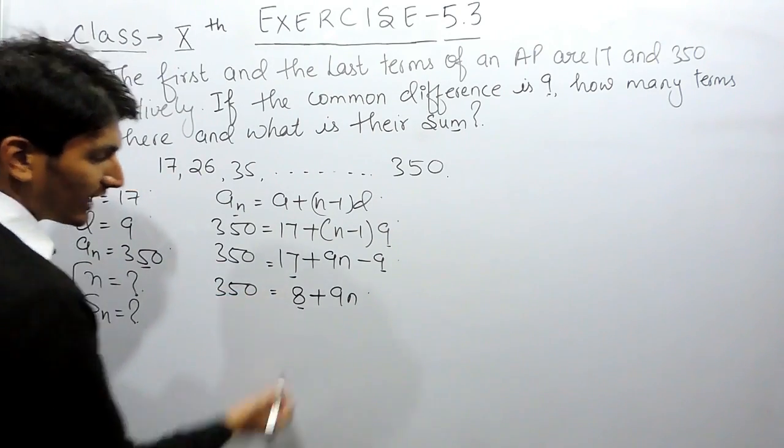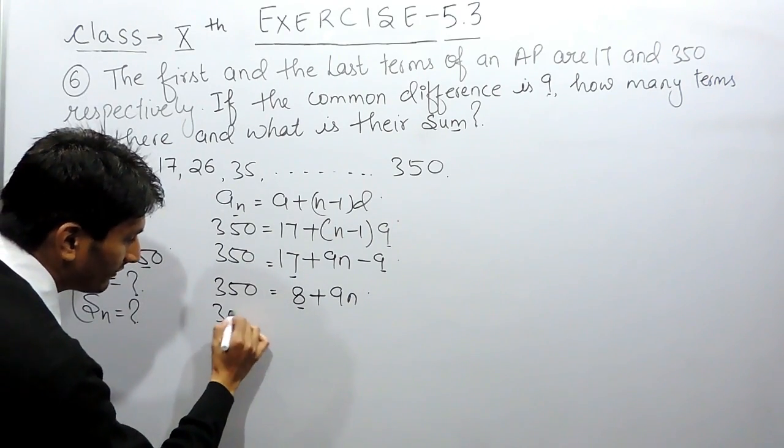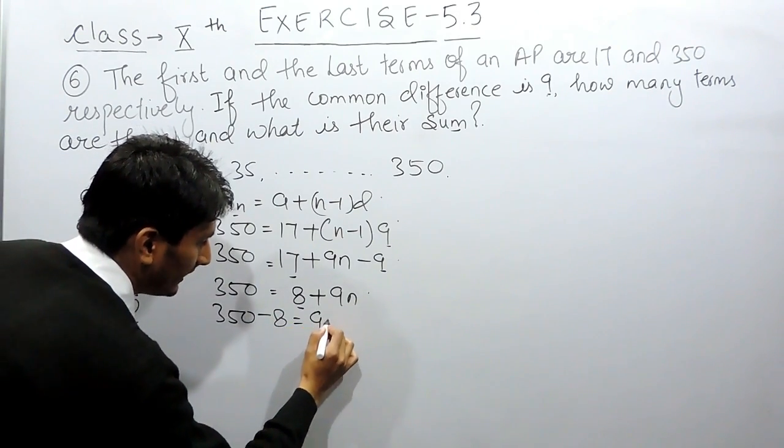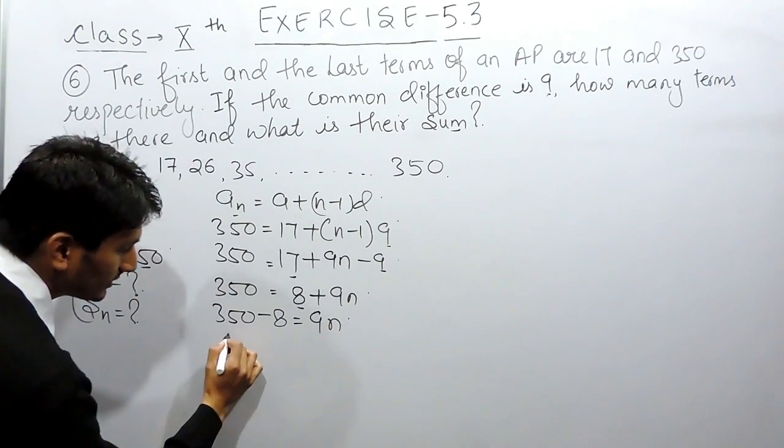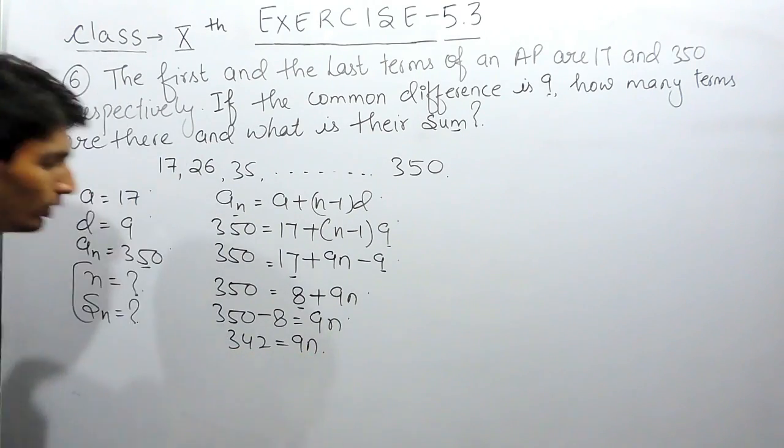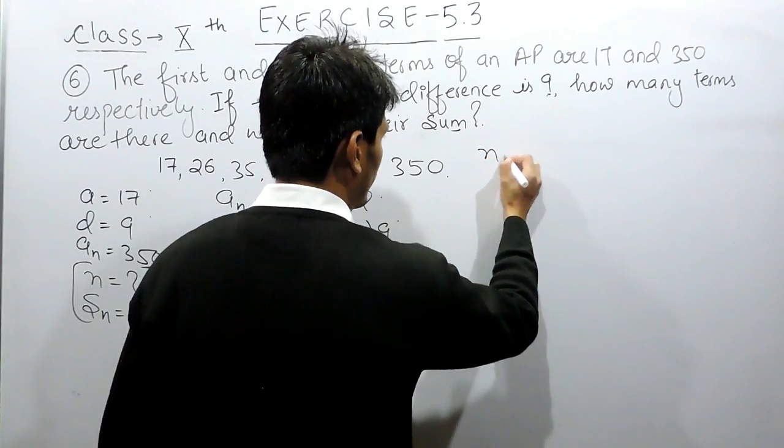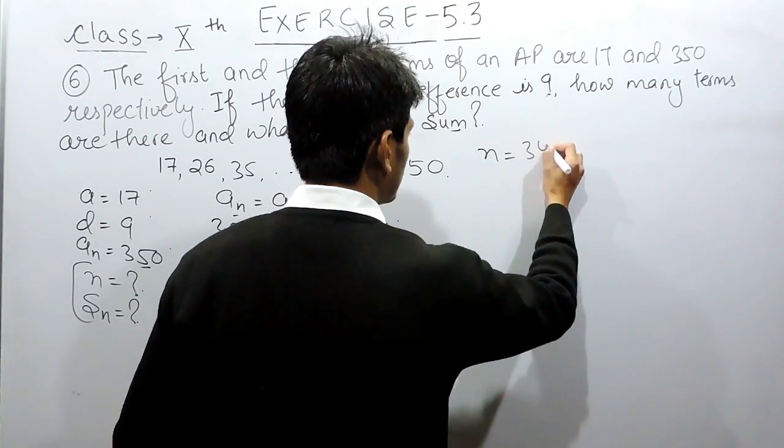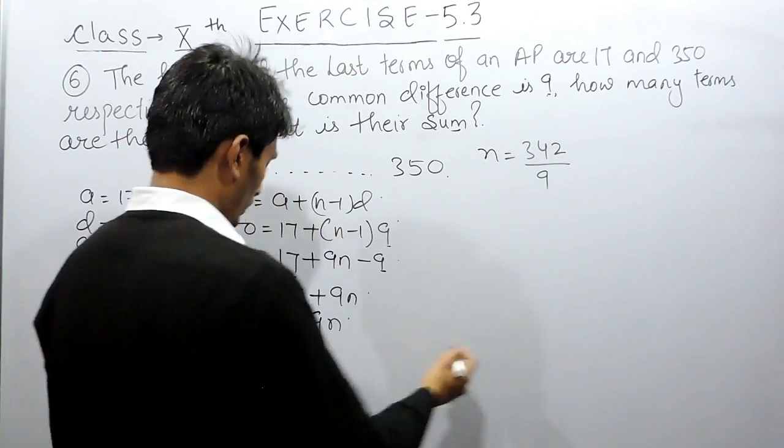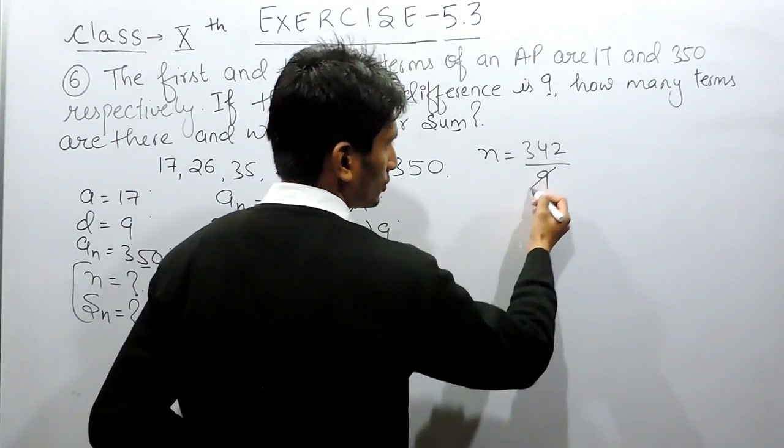Now, to solve this linear equation, I have to shift this constant to the left hand side and this is 350 plus 8 will become minus 8 and this is 342 is equals to 9n. Now, if I have to find the value of n, so the value of n will be equals to 342 upon 9 because this 9, when shifted to this side, it should divide here.